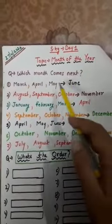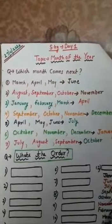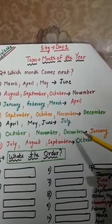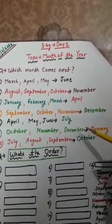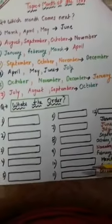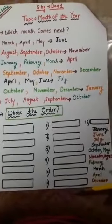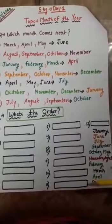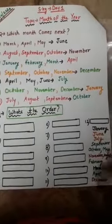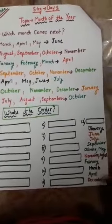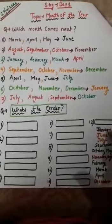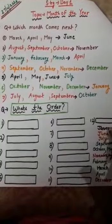This is the full exercise. Now the next exercise is: What's the order? You have to arrange the months according to the order, like January — after January what comes? February — after February what comes? March.